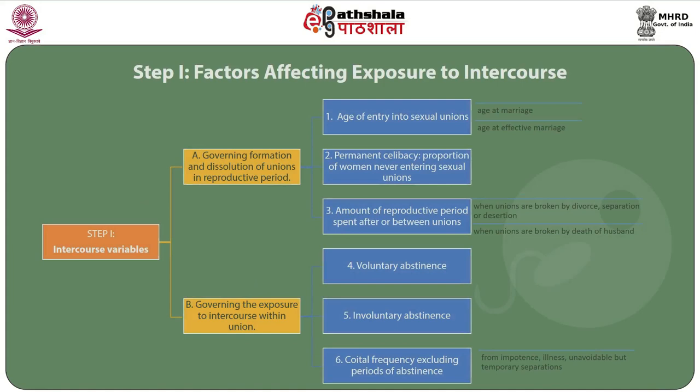Let us consider the 11 points by Davis and Blake. First, age of entry into sexual union. Second, permanent celibacy — that is, the proportion of women who never had a sexual union. Third, the amount of reproductive period spent after or between unions: when unions are broken by divorce or separation, or when unions are broken by death of husband. Fourth, factors governing the exposure to intercourse within union: voluntary abstinence, involuntary abstinence from impotency, major illness or unavoidable but temporary separation, and coital frequency excluding periods of abstinence.